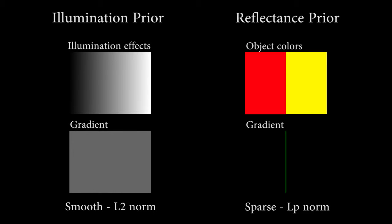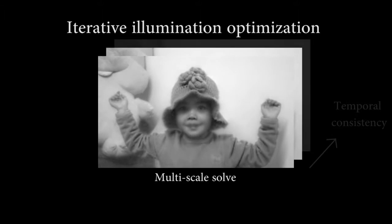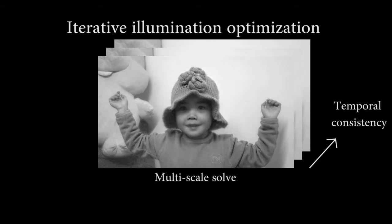We assume priors on the gradients in a video, that illumination gradients are smooth, constrained by an L2 norm, and that reflectance gradients are sparse, constrained by an LP norm. Then, we iteratively solve from a luminance-chrominance decomposition for a hybrid L2-LP norm performed very quickly with lookup tables while maintaining temporal consistency.